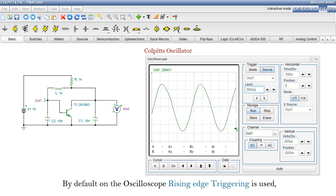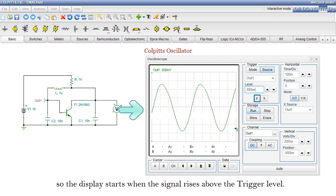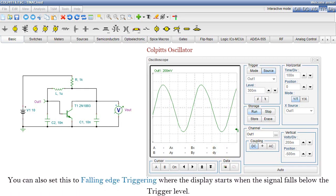By default, on the oscilloscope's rising edge, triggering is used. So, the display starts when the signal rises above the trigger level. You can also set this to falling edge triggering, where the display starts when the signal falls below the trigger level.